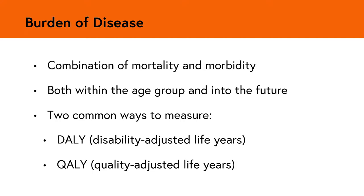So what is burden of disease? This is a combination of mortality and morbidity. Mortality contributes the years of life lost if you die from a condition. Morbidity contributes the years of life lived with disability. For example, if you were bedridden from an acute illness for one year and then recovered completely, that would contribute almost an entire disability-adjusted life year (DALY). QALYs are another measure of disease burden, looking at both the quality and quantity of life lived — years gained in perfect health — whereas DALYs measure years of perfect health lost due to illness. In this presentation, we will focus mainly on DALYs.